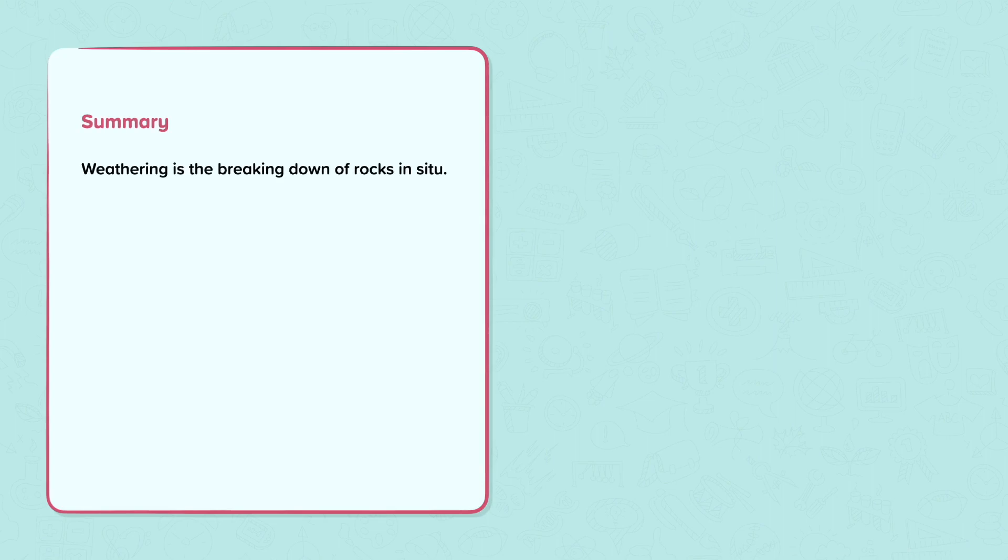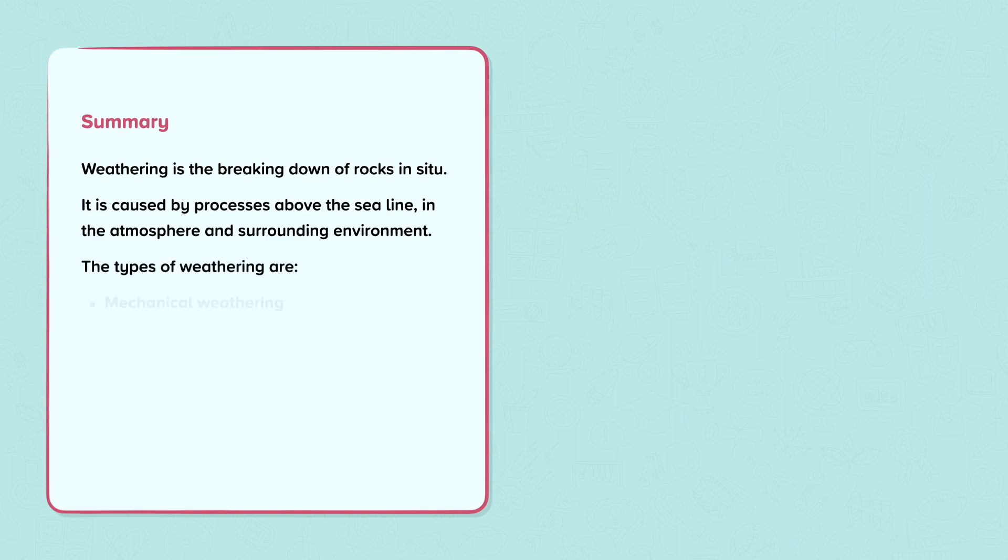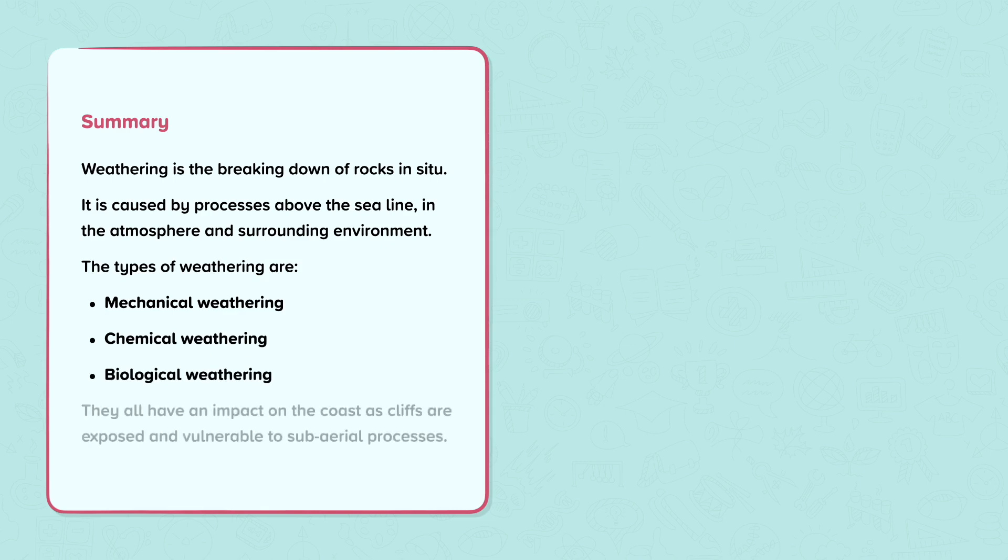Summary. Weathering is the breaking down of rocks in situ. It is caused by processes above the sea line, in the atmosphere and surrounding environment. The types of weathering are mechanical weathering, chemical weathering and biological weathering. They all have an impact on the coast as cliffs are exposed and vulnerable to sub-aerial processes.